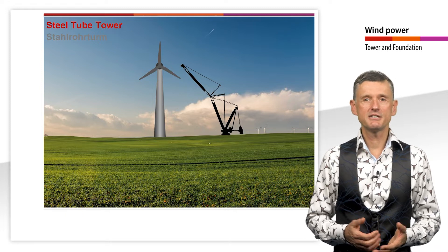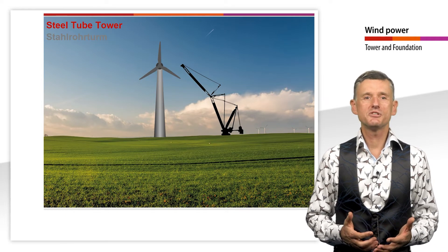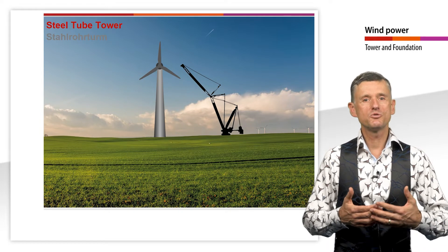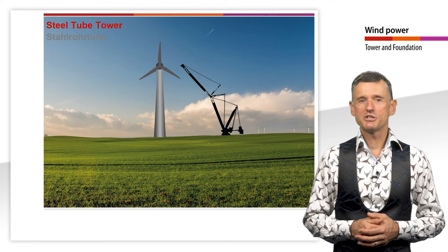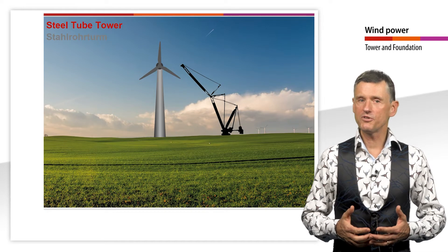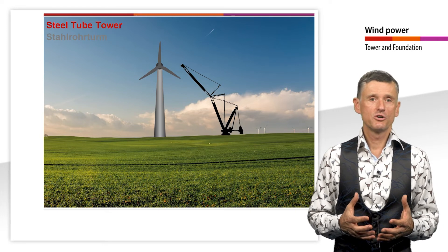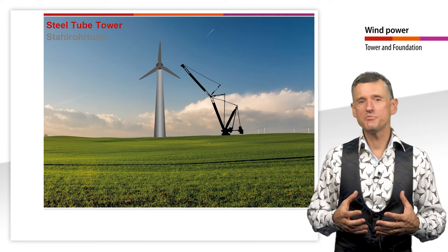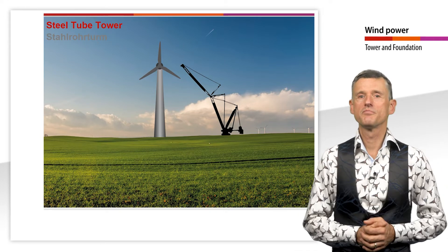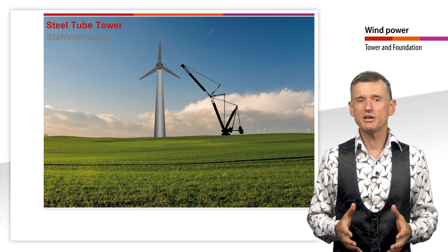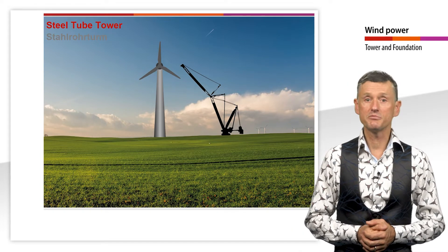However, the standard construction method preferred to date consists of several sections that are bolted together at the installation site. Larger towers are manufactured in up to five sections. The towers usually have a conical shape with a diameter that tapers from the tower base to the tower head. This saves weight compared to a cylindrical geometry for a given stiffness requirement.